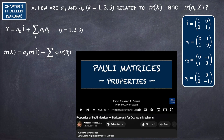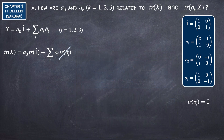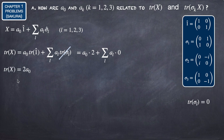A useful property of the Pauli matrices is that the trace of each sigma is equal to 0, which is obvious since the trace is the sum of the diagonal elements. The trace of sigma1 is 0, and similarly for sigma2 and sigma3. Since the trace of the 2x2 identity matrix is equal to 2 (1 plus 1), the result is 2 times A0.